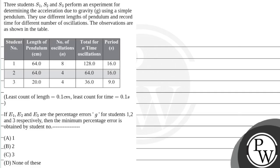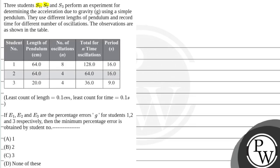Hello, let's read the question. Question is given that three students, S1, S2, and S3 perform an experiment for determining the acceleration due to gravity g using a simple pendulum. They use different lengths of pendulum and record time for different numbers of oscillations. The observations are shown in the table.